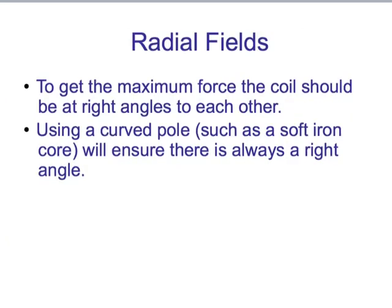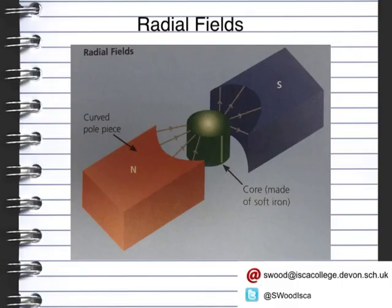To ensure you get the maximum force, the coil should be at right angles with each other. You can also use a curved pole, such as a soft iron core. The pole in terms of the north and south, such as a soft iron core, will ensure that you get the correct angle each time. This is what we mean by having the soft iron core, and then you have the radial field going through the magnetic field.